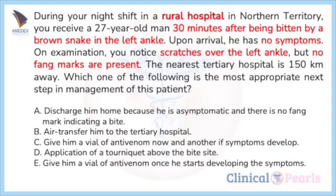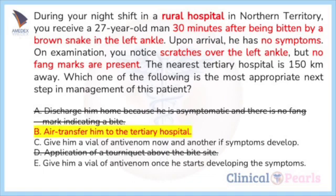In this case, PBI should be done first as first aid, however it is not among the choices. D) application of tourniquet is wrong. A) discharging the patient is wrong as this patient requires observation. B) assuming that this rural hospital has no capacity for definitive management, the most appropriate next step is to transfer him to the tertiary hospital — the answer is B. C) is wrong as this patient is not currently presenting with paralysis, excessive bleeding, change in sensorium, oliguria, anuria, or myoglobinuria, which are signs of envenomation. E) may be correct but should not delay the urgent transfer of the patient.